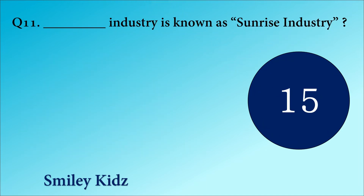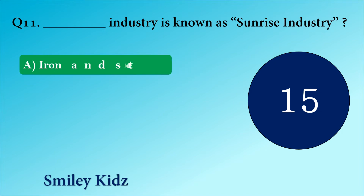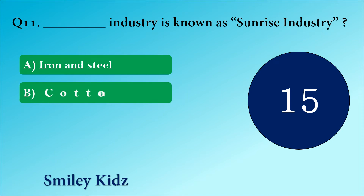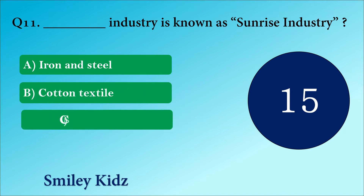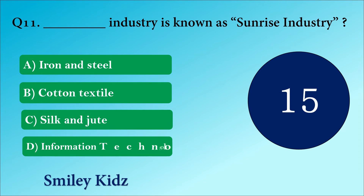Question number 11. Dash industry is known as sunrise industry. The options are A. Iron and steel, B. Cotton textile, C. Silk and jute or D. Information technology.